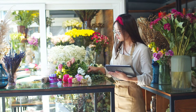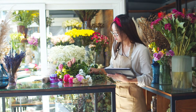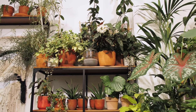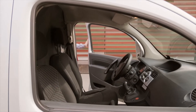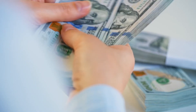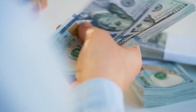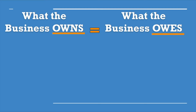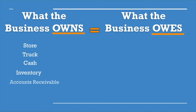Now let's say you inherited a flower shop from your family. You now own the family store. You also bought a truck for deliveries and you manage two employees. In addition, you have cash on hand and inventory. So this will go under the part of the equation that you own: store, truck, cash, inventory, and accounts receivable.